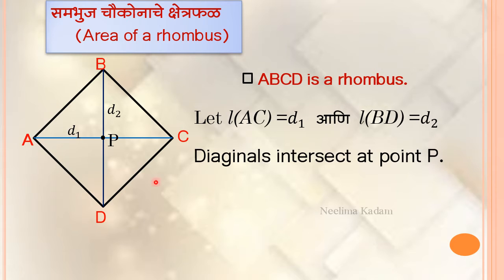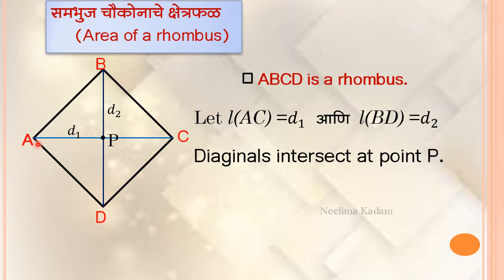In this figure, as you can see, we get four congruent right-angle triangles: triangle APB, triangle BPC, triangle CPD, and triangle APD. These are the four congruent right-angle triangles we get.